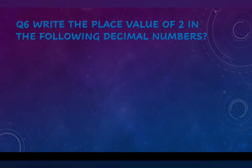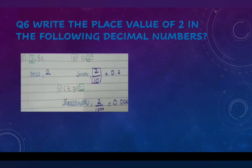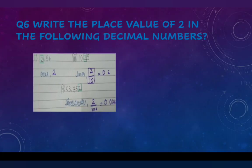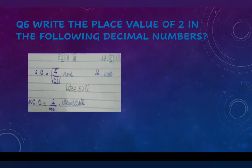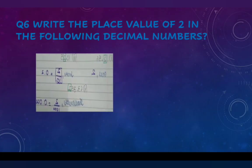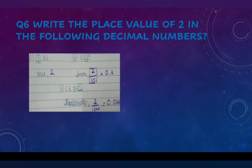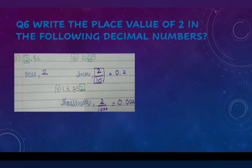Write the place value of 2 in the following decimal numbers. For example, in 2.556, the place value of 2 is 1. We have to solve all such questions similarly.